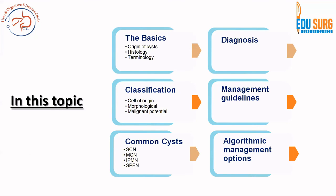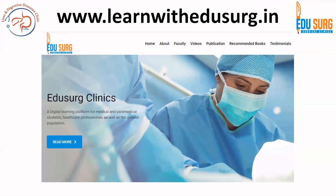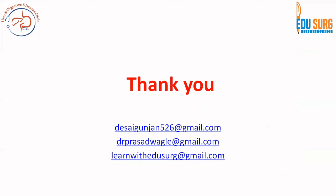We have discussed serous cystic neoplasm and SPEN first because the mucinous ones need more planning and more management options. We will review the cyst fluid analysis and imaging characteristics separately. This series has been designed so that you understand pancreatic cystic lesions very practically and do not get confused with the 10 to 12 guidelines already existing for managing these lesions. You can visit our website to look at past videos, recommended books, faculty publications, and leave testimonials. Thank you.